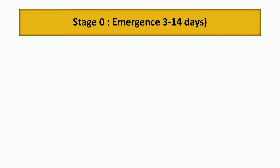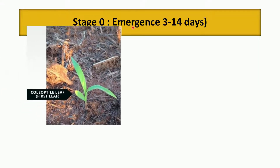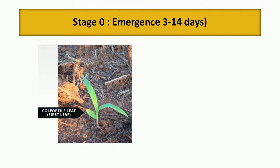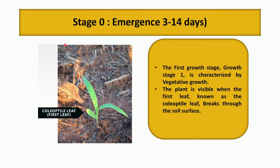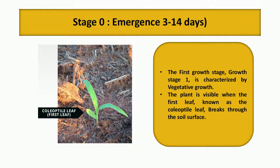Let us talk about the emergence stage. It takes 3 to 14 days for emergence after sowing. The identification characteristic of the sorghum plant at this stage is you can observe the coleoptile leaf which breaks out through the soil. It is characterized by vegetative growth. The time between planting and emergence depends upon soil moisture content, temperature, residue cover, distribution, planting depth, and seed vigor.